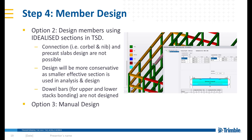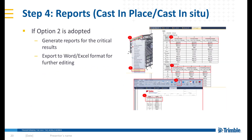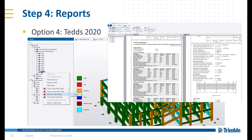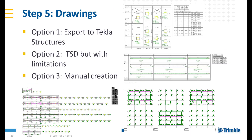Option 3: manual design. If option 2 is adopted, you can generate reports for the critical results. The report can be exported to Word or Excel format for further editing. Option 4: send the precast members modeled in TSD to TEDS 2020 for design and reports. Step 5: drawings. Option 1: export to Tekla structures. Option 2: TSD but with limitations. Option 3: manual creation.